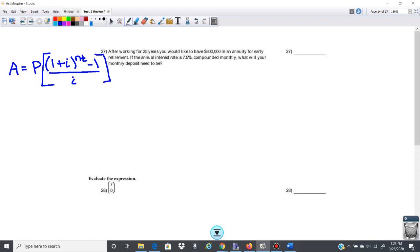And then we want to remember that i is going to be the rate divided by the number of times compounded.